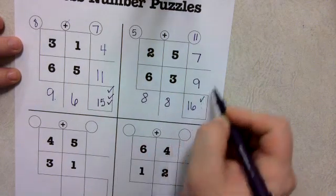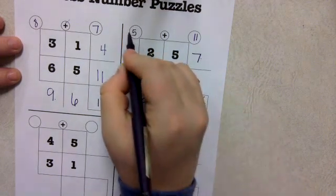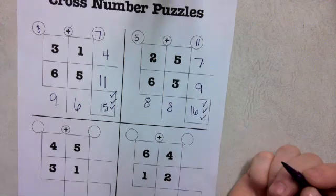So, 8 plus 8 is 16, 9 plus 7 is 16, and 5 plus 11 is 16.